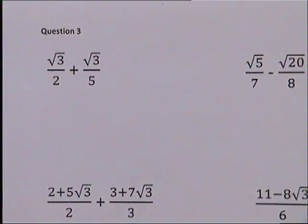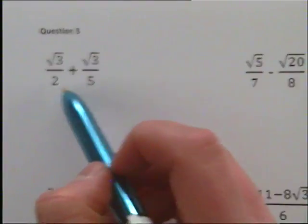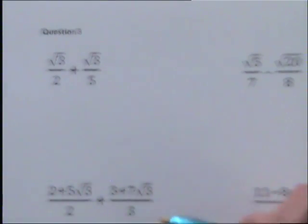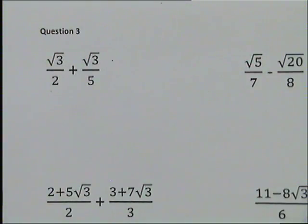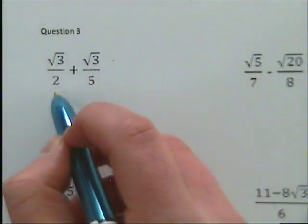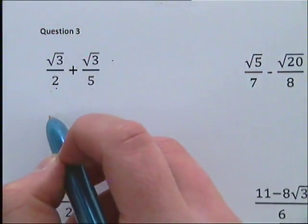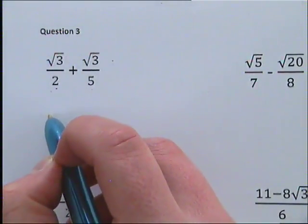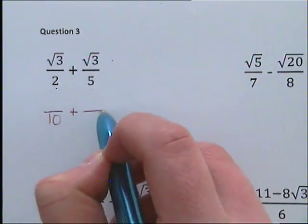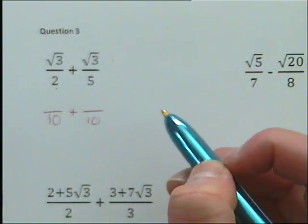Question 3, first question — adding fractions again. Although they've got thirds on the top, we're still just adding fractions. We need to make our bottom numbers the same, so we're going to times our two denominators together. 2 times 5 is 10, so we're going to have two 10s on the bottom.